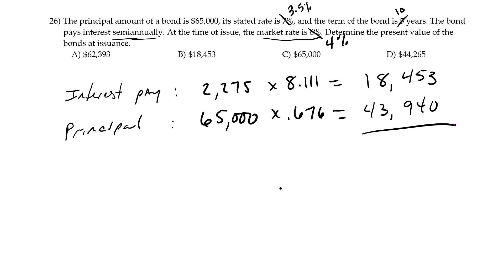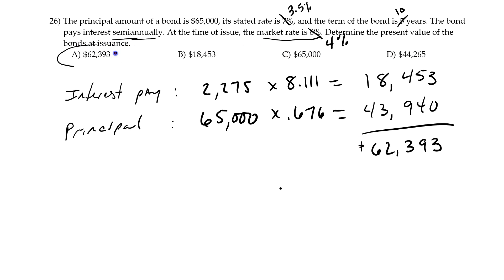I add the two together: $18,553 plus $43,940, and I get $62,394. That's the issue price of the bond. Scanning the answer list, A is the correct answer.